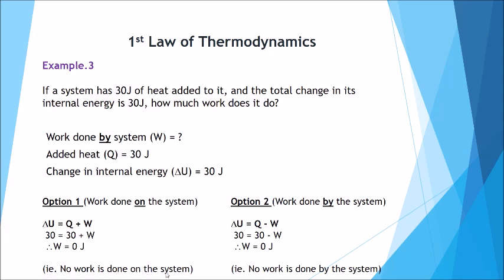From a physics perspective, delta U equals Q minus W. The change in internal energy is 30, the heat added is 30, and the work done by the system is zero. So there's no work done on the system and no work done by the system — the system is not contributing to the change in internal energy.